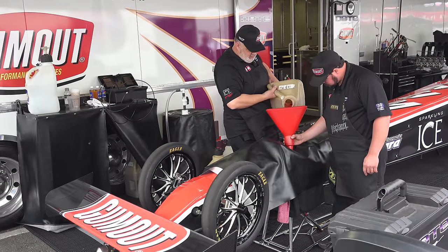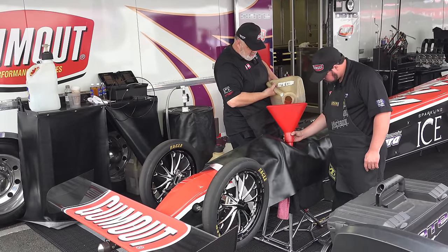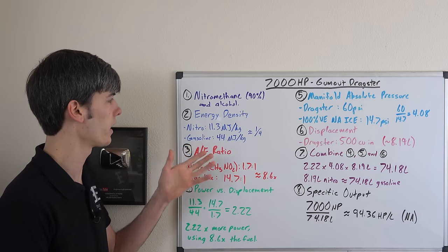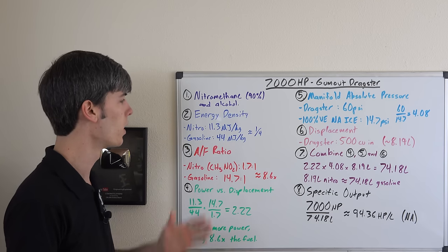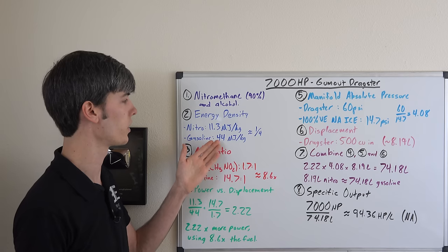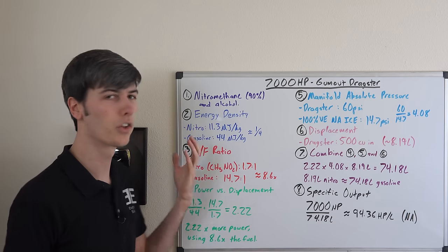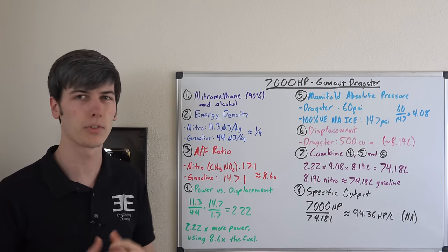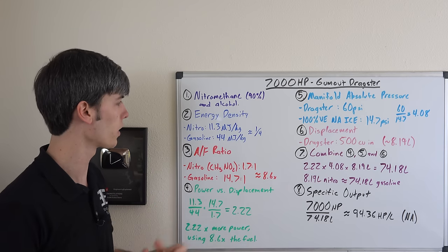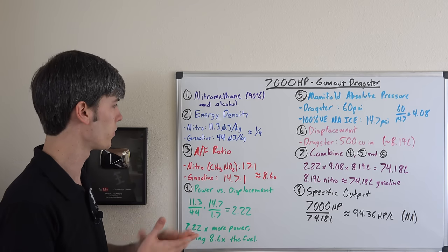Now one of the key differences between nitromethane and gasoline is its energy density. Nitromethane has an energy density of 11.3 megajoules per kilogram whereas gasoline has an energy density of 44 megajoules per kilogram. So as you can see gasoline is quite a bit more energy-dense, about four times as much energy in the same amount of mass of gasoline versus nitro.